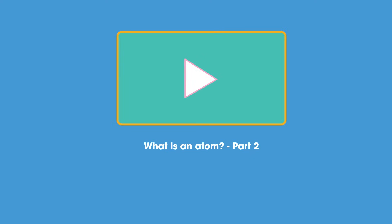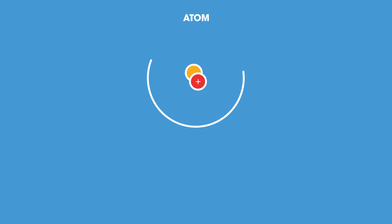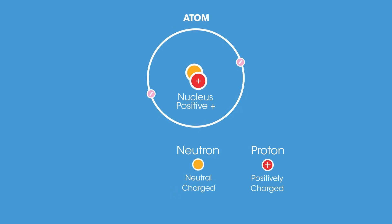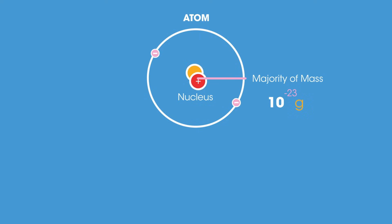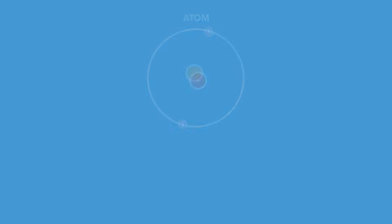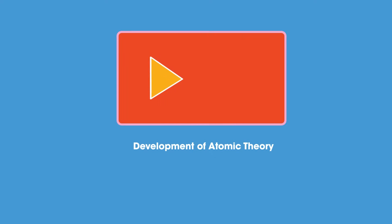So there we have the structure of an atom. Atoms have a positively charged nucleus made up of positively charged protons and neutrally charged neutrons, which is orbited by negatively charged electrons. The majority of the mass of an atom is found in the nucleus, and the typical size of atoms is ten to the power of negative ten meters. To learn about how we discovered the existence of atoms and the structure of atoms, watch this video.